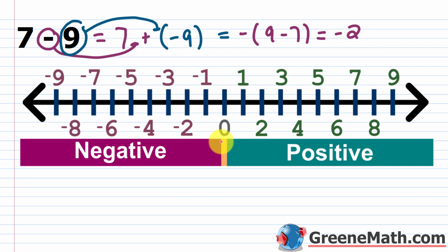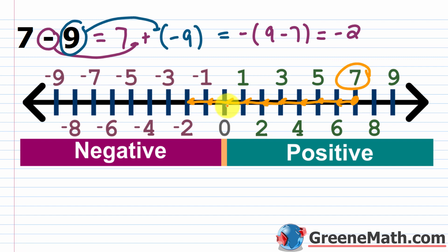You can also see this on the number line. Starting at 7, whether you subtract 9 or add negative 9, you move 9 units to the left: 1, 2, 3, 4, 5, 6, 7, 8, 9. When I subtracted 7 I got to 0, and then subtracting 2 more puts me at negative 2. So 7 minus 9, which equals 7 plus negative 9, gives us negative 2.